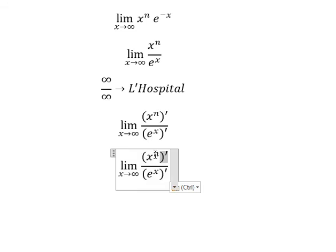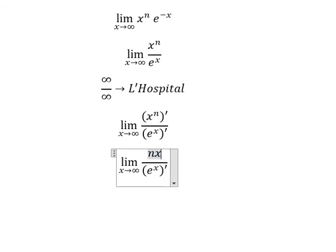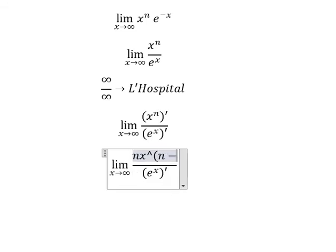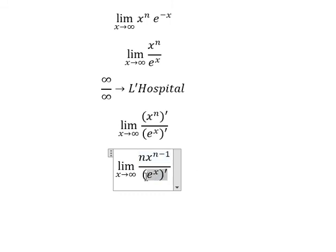So this one we have n x to the power of n minus 1, this one we keep the same. Now when x goes to positive infinity, this one will go to positive infinity, this one will go to positive infinity.